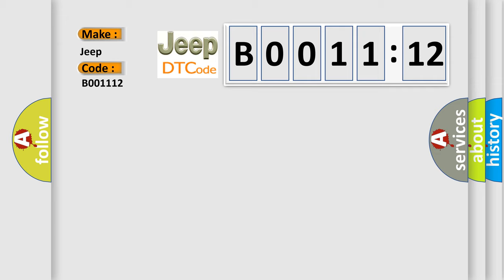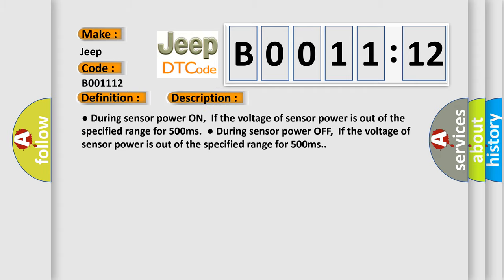The basic definition is ABS sensor supply voltage. And now this is a short description of this DTC code. During sensor power on, if the voltage of sensor power is out of the specified range for 500 milliseconds. During sensor power off, if the voltage of sensor power is out of the specified range for 500 milliseconds.